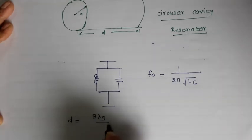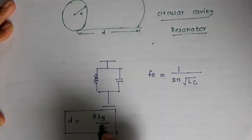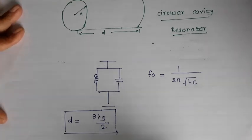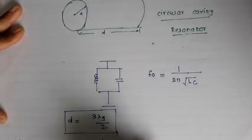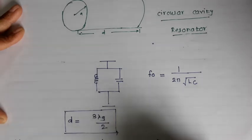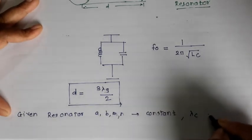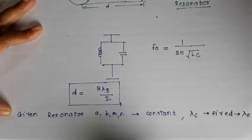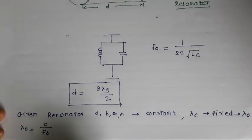The distance t must be equal to multiples of lambda_g by 2. For a given resonator, the mode parameters a, b, m, n are constant. We know that lambda_c depends on these factors, so if these values are fixed, lambda_c is fixed. If lambda_c is fixed, lambda_0 will also be fixed. Since lambda_0 = c/f0, f0 will also have a constant value, which is the resonant frequency of the cavity resonator.